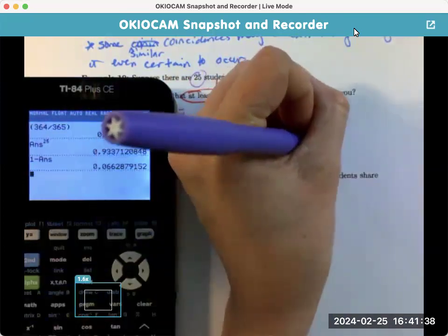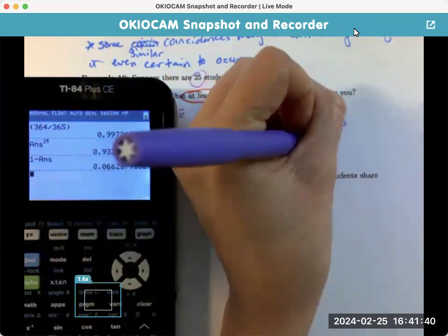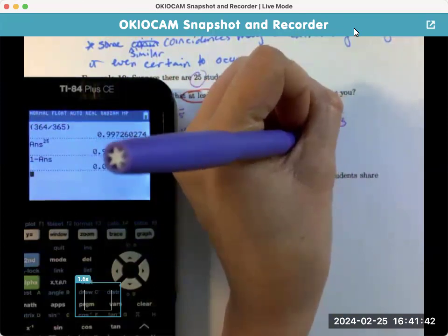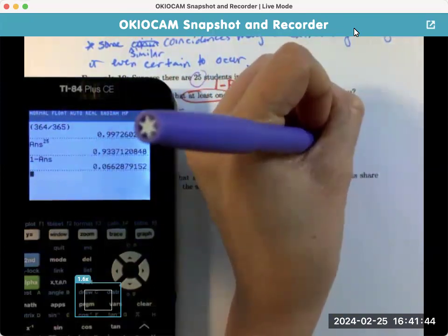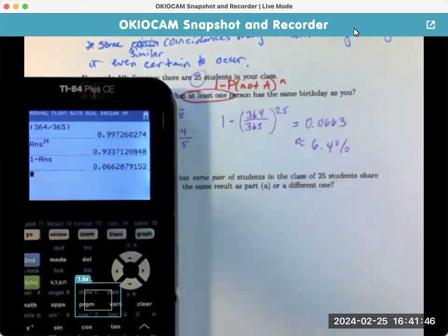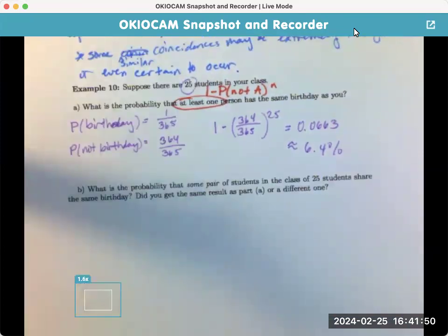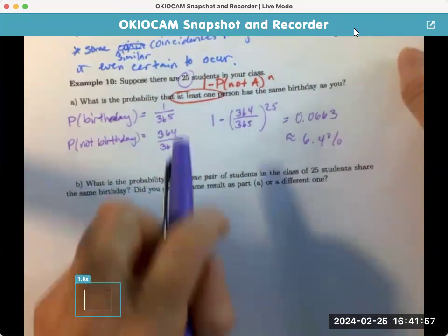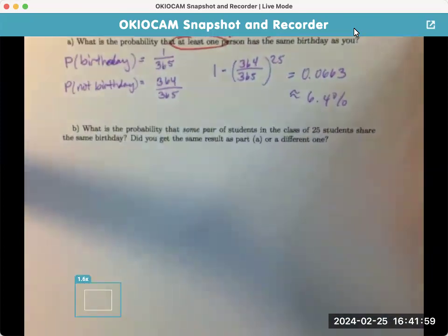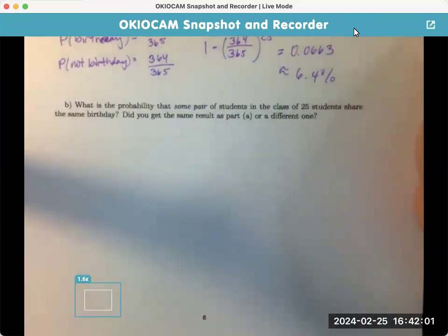So, this is equal to 0.0663. We'll round up. Okay. So, about 6.4% likely. So, having the same birthday as you, 6.4% likely. Well, that's actually not that much, is it? I think 25 is pretty low. Oh, maybe it was B I was thinking of.